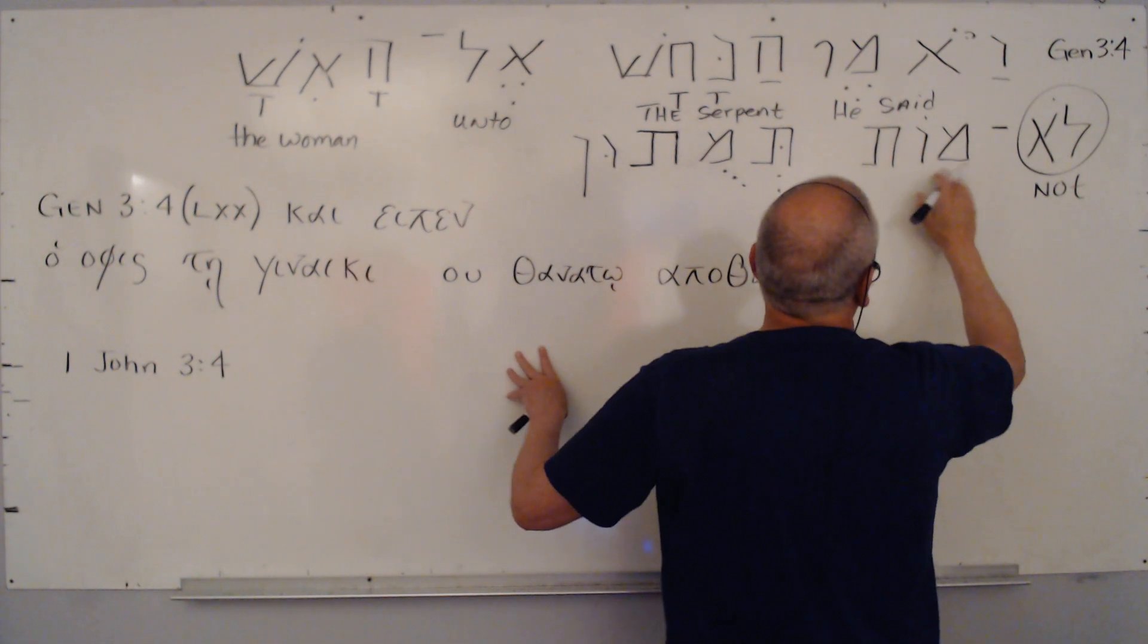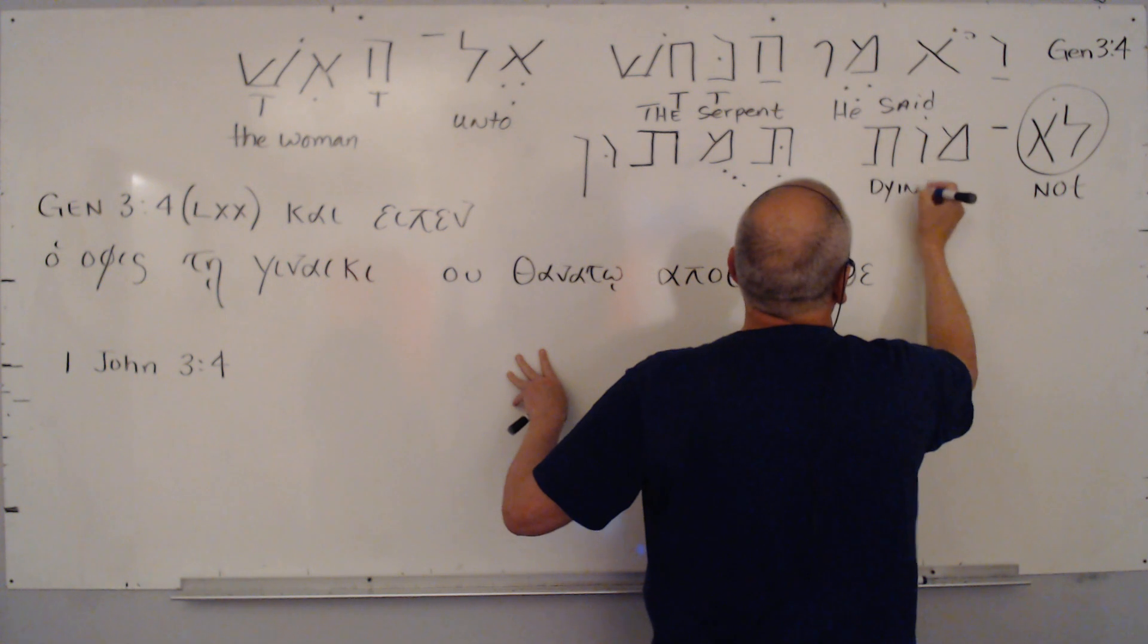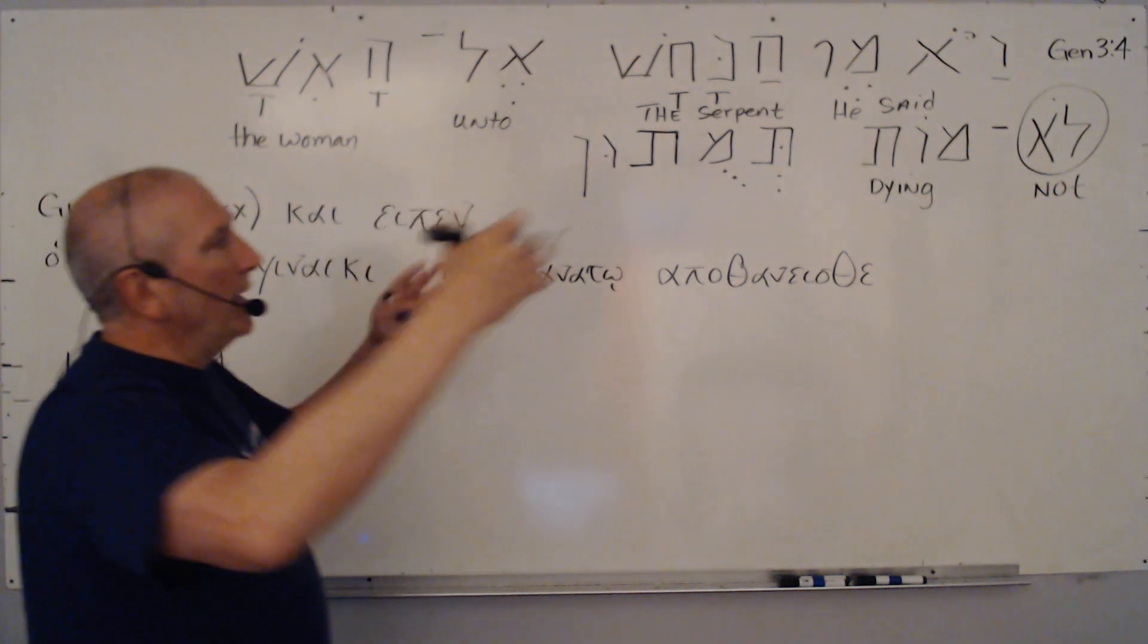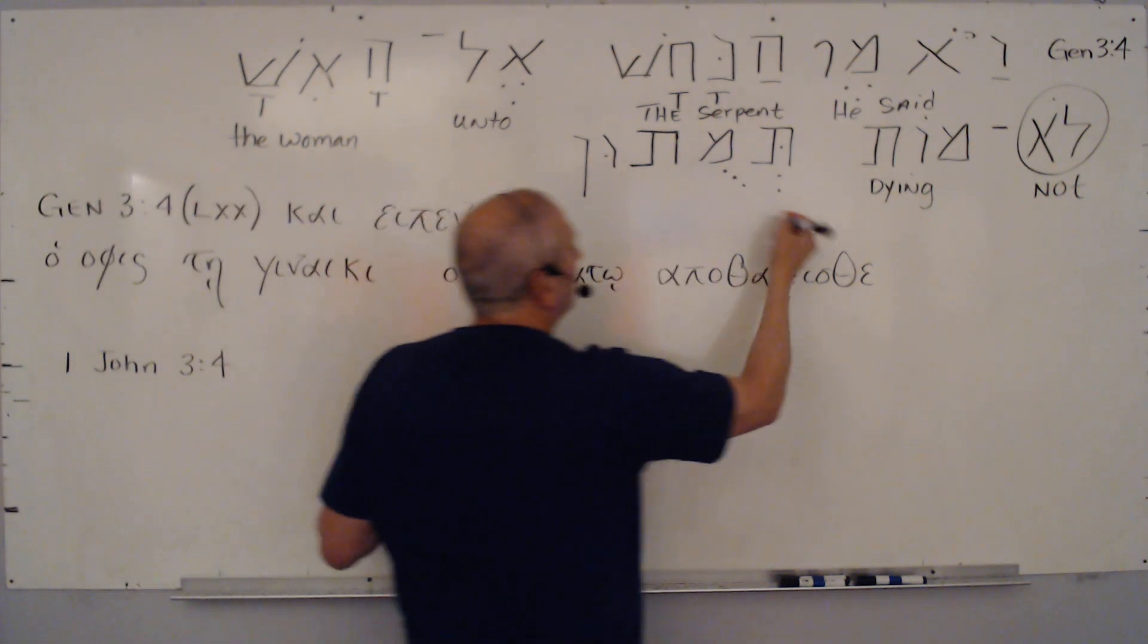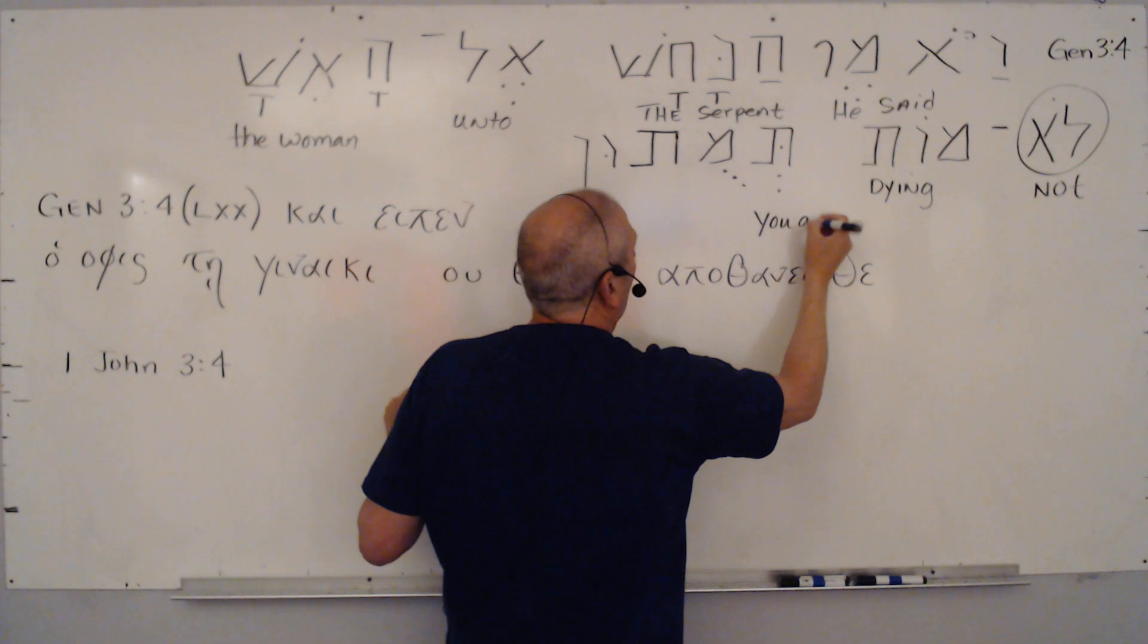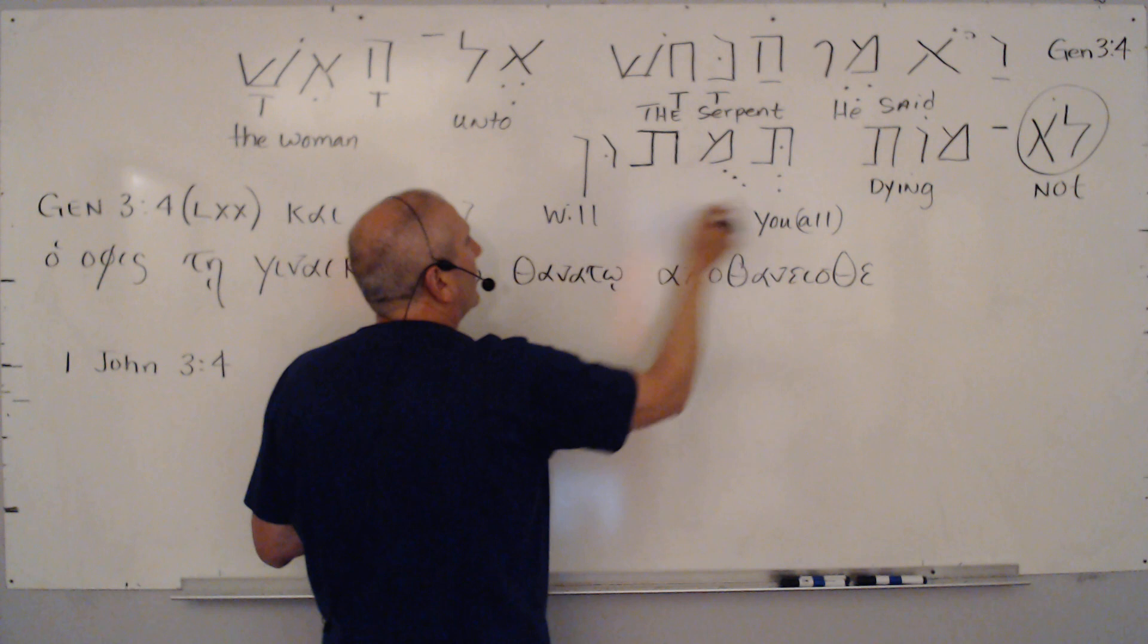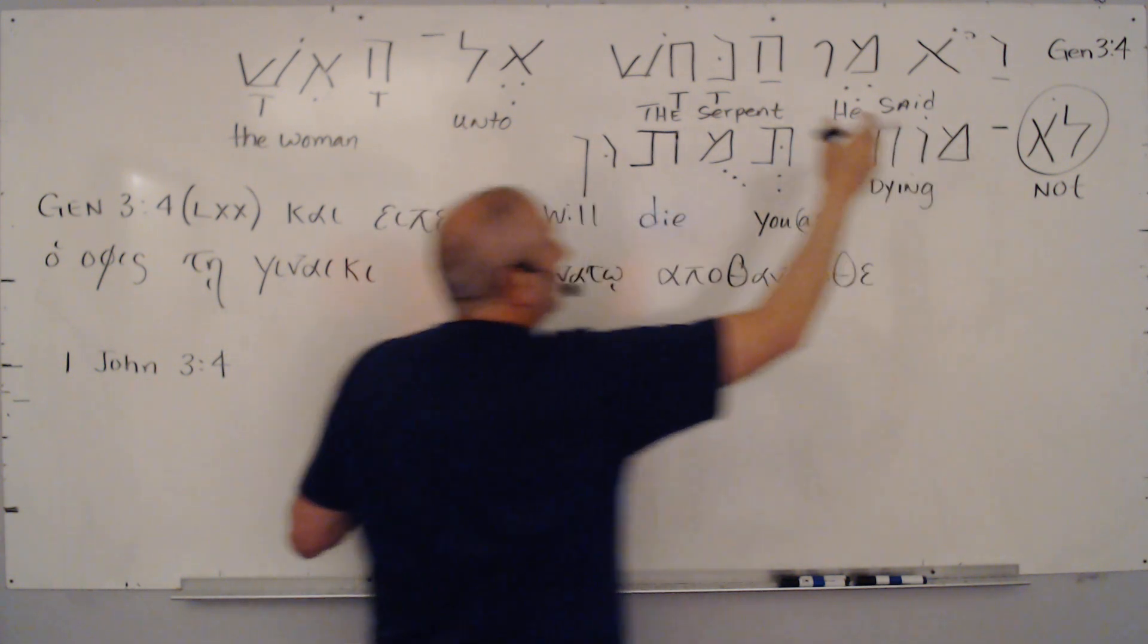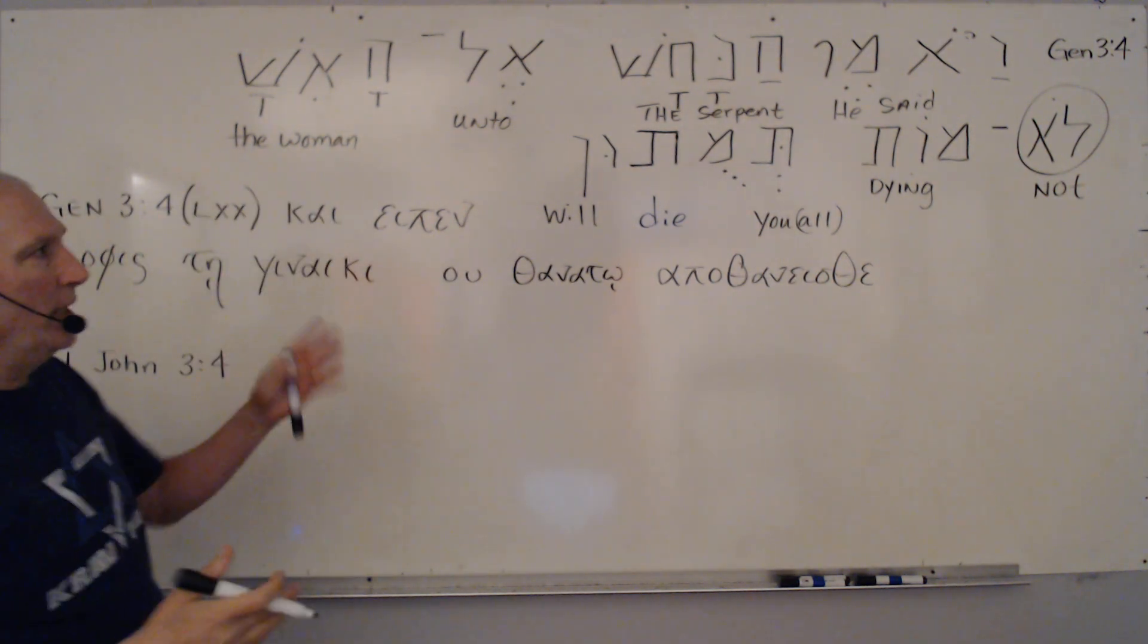The absolute infinitive 'dying,' where it says surely God said you will surely die, he's now said to her, 'You all will not die.' So you see how he negated that.